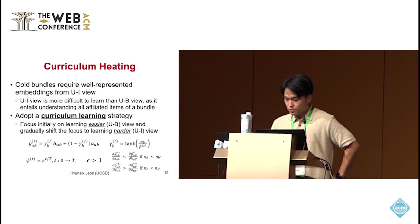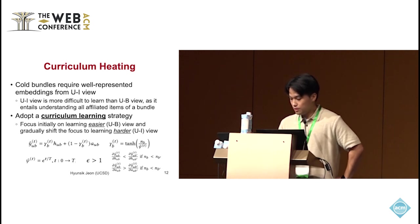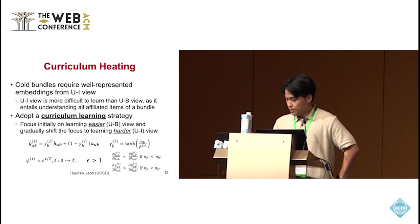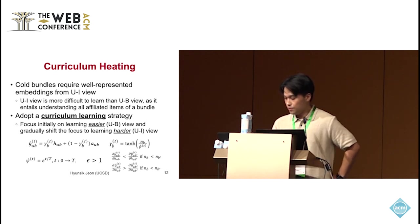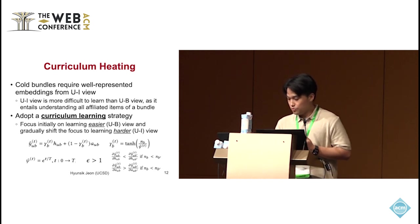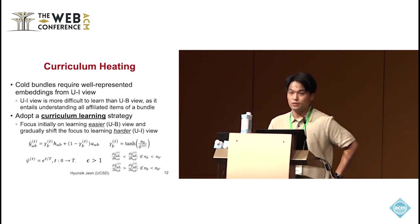Here, T denotes training epoch, and epsilon is a hyperparameter of the maximum temperature. Basically, it has a large positive value. Therefore, gamma-b decreases as training progresses, and thus learning focus shifts from the user-bundle view to the user-item view. This progressive learning helps to build robust representations for cold bundles. This also holds the property that less popular bundles rely more on the user-item view at a certain time.